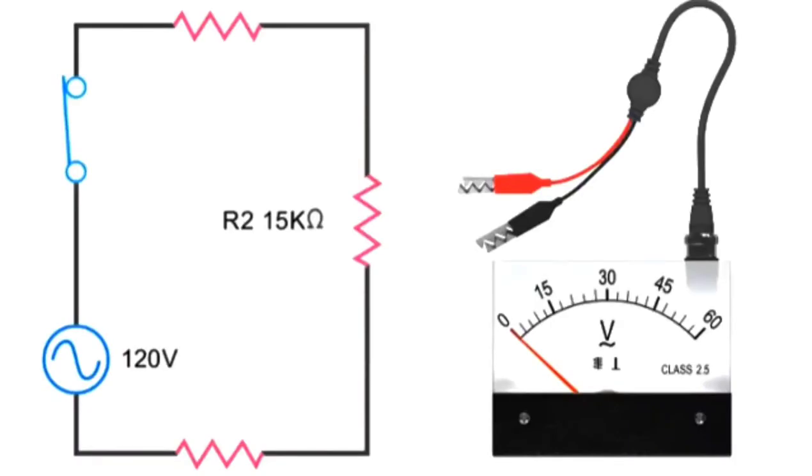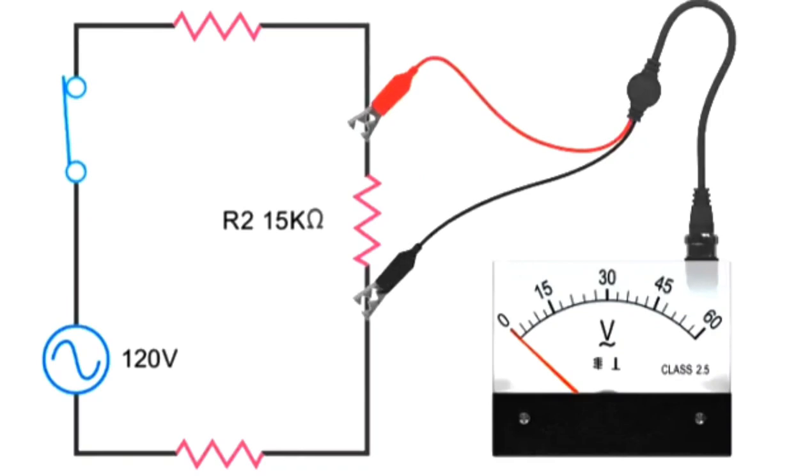A voltmeter is used to measure a potential voltage difference across two points in a circuit. To measure voltage in a circuit, the meter is connected in parallel with the components to be measured.